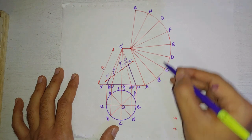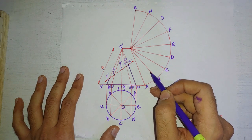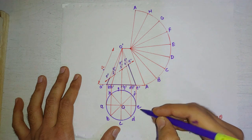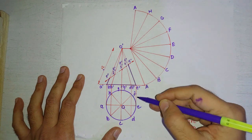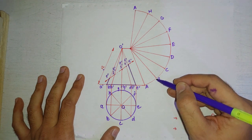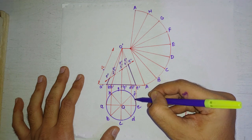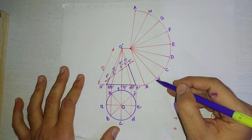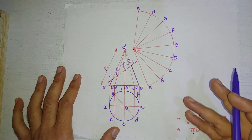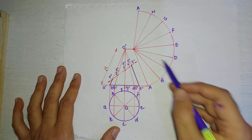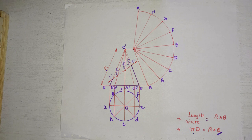We also draw the generators on the development. To draw these generators, we divide the total angle theta into the required number of equal parts. Note that unlike a pyramid, we cannot transfer the chord distance e to f directly using a compass, because that gives the straight-line chord length, not the arc length. So we must divide the angle into equal parts to correctly place the generators.